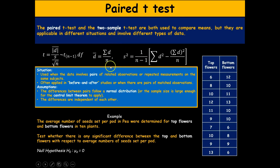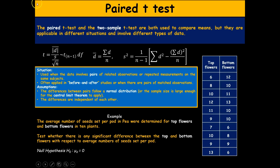The paired t-test is another type of t-test. Both the paired t-test and the two-sample t-test compare means, but they apply in different situations. The paired t-test is used when data involves pairs of related observations or repeated measures on the same subject — such as before-and-after studies or matched observations with correlated data. The assumption is that the differences between pairs follow a normal distribution, or the sample size is large enough for the central limit theorem to apply.